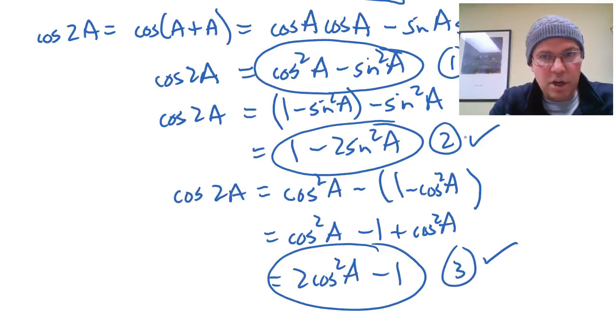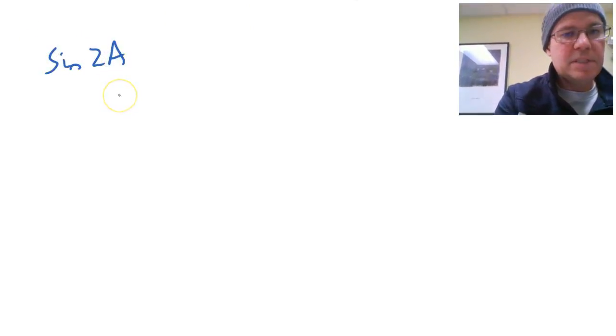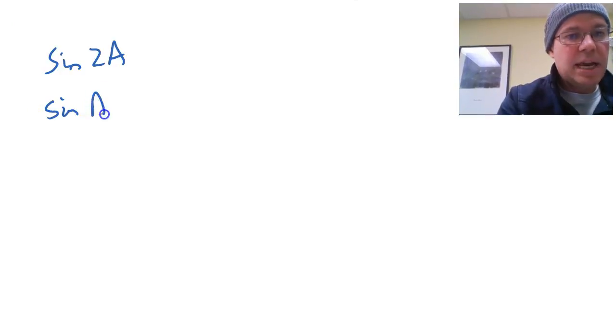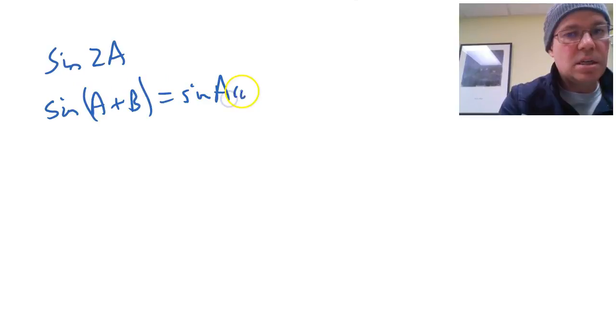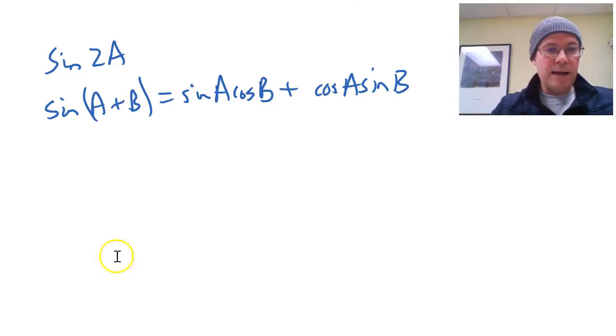OK, let's have a look at the other two, which are a little bit more straightforward. So sin 2A comes from the formula for sin A plus B. So sin A plus B, if you remember, is sin cos plus cos sin, with the A, B going in the same order.